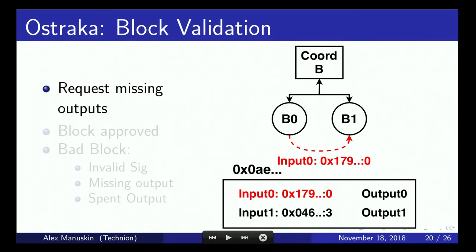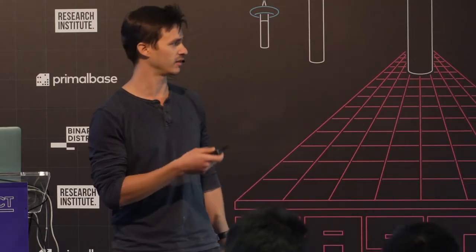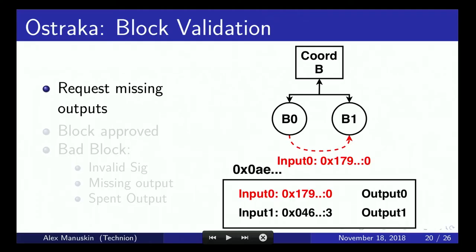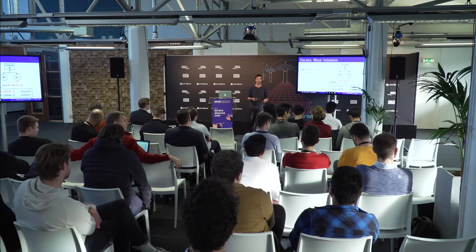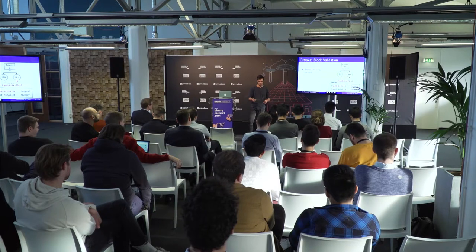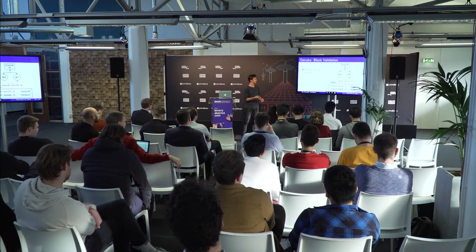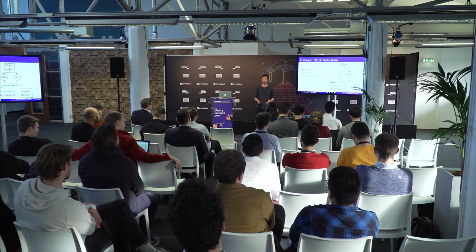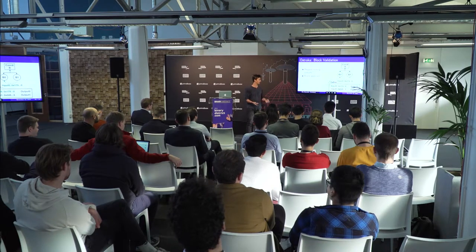Now let's look at how node B processes and validates these transactions. Node B has shard 0 and shard 1. It has some inputs, and since the transaction hash is evenly distributed, in the case of two shards, about half won't be in the UTXO set of shard 0 — with n shards, (n-1)/n won't be in shard 0. Shard 0 must request the missing information — the signature and script — from shard 1. Since it knows the shard index and transaction index, it knows exactly who to ask. Shard 1 responds, and shard 0 now has all the information needed to validate the block.